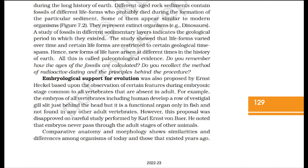Do you remember how the ages of fossils are calculated? Do you recollect the method of radioactive dating and the principles behind the procedure? Embryological support for evolution was also proposed by Ernst Haeckel, based on the observation of certain features during the embryonic stage common to all vertebrates that are absent in adults. For example, embryos of all vertebrates, including humans, develop a row of vestigial gill slits just behind the head, but it is a functional organ only in fish. However, this proposal was disapproved on careful study performed by Karl Ernst von Baer, who noted that embryos never pass through the adult stages of other animals.